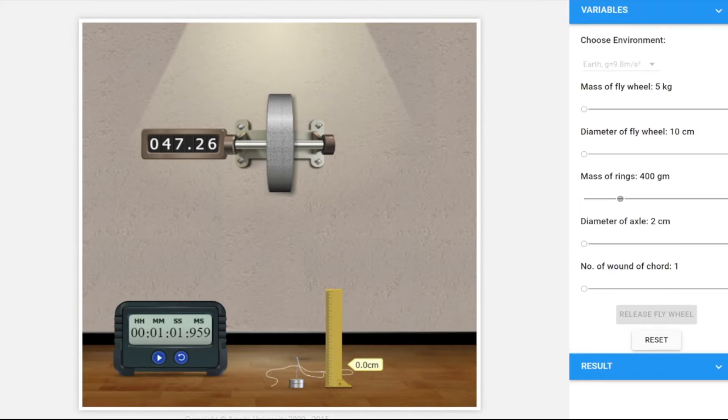You can see the time is almost twice the last time when we doubled the mass. Let's keep the mass the same and increase the number of rounds to two. As the number of rounds is increased, the height increases, so the potential energy will increase and the torque will also increase, leading to an increase in time and revolutions made. It has given a torque and is rotating. Let's wait for it to stop and take our next reading.